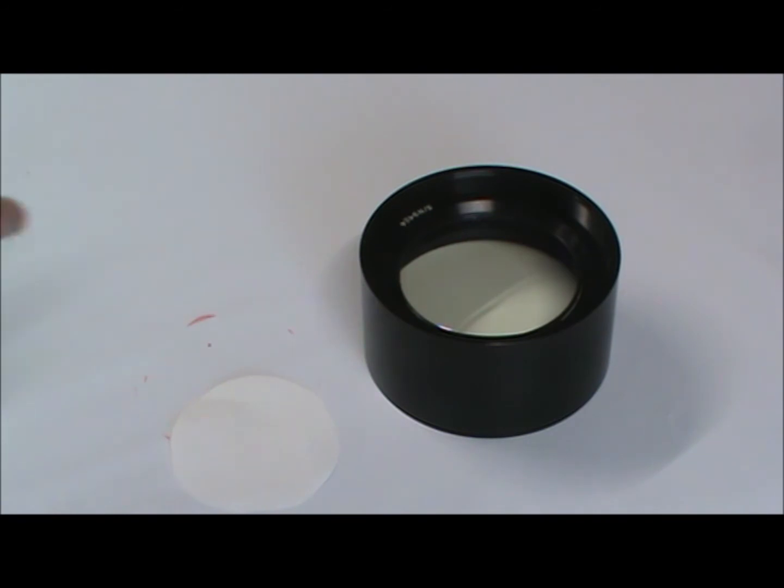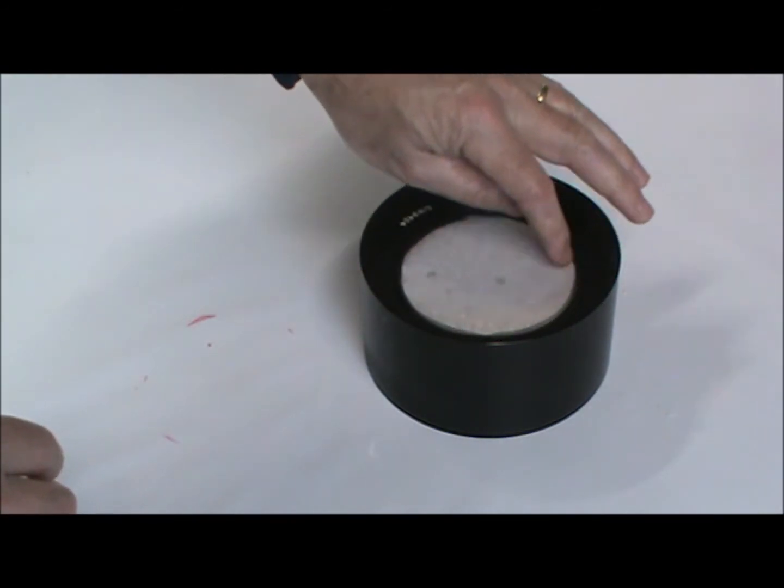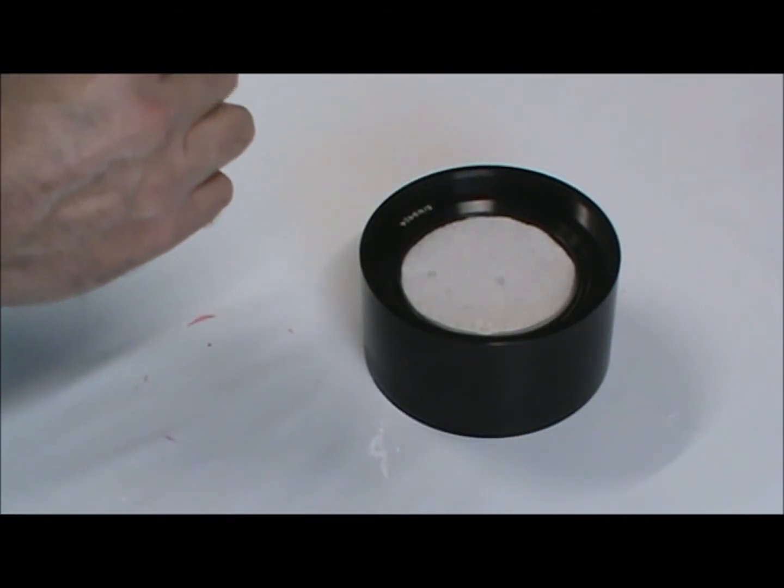Next, place your wetted lint-free cloth, cut smaller than the o-ring, onto the center of the optic. You can apply a few more pretreatment drops on the cloth to keep it wet if necessary.